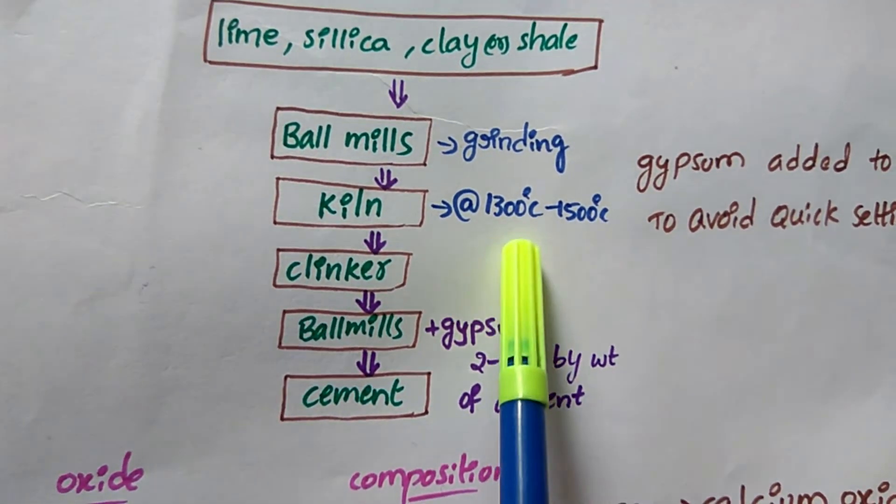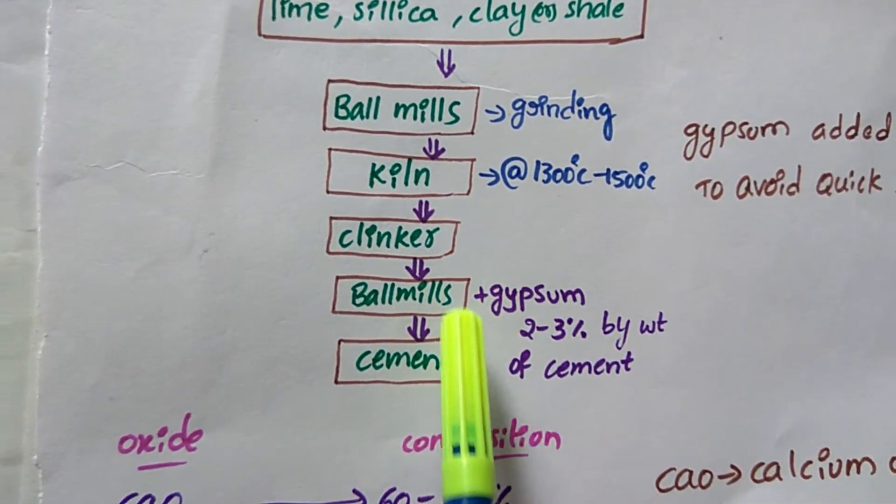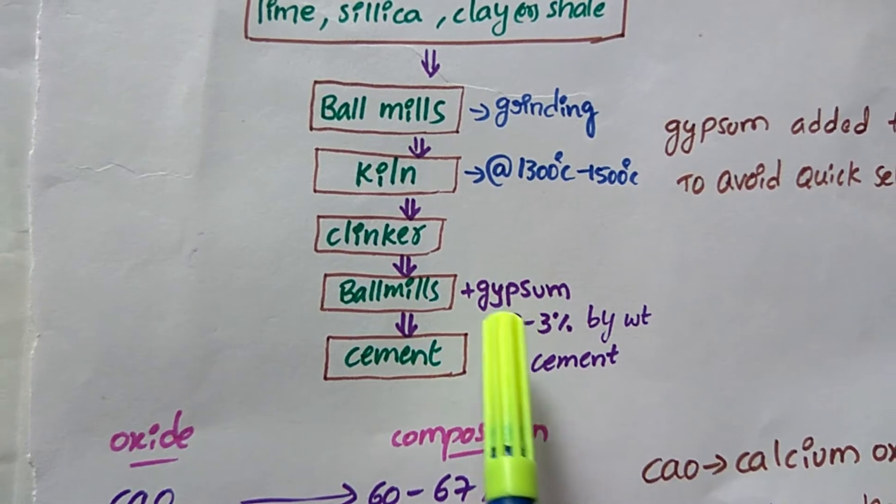1500 degrees Centigrade. After this process, clinker forms in the kiln. The clinker is then sent to ball mills. In